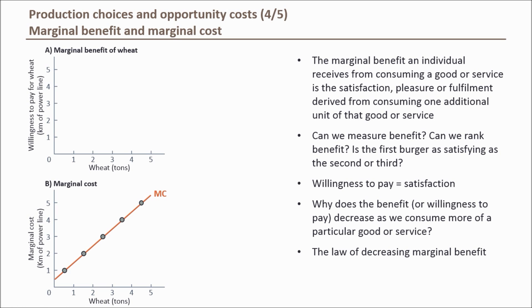The reason marginal benefit values are given is because benefit or satisfaction is not derived from any sort of function, but rather it is a reflection of consumer preferences. What we do know is that marginal benefit should be a decreasing line as per the law of decreasing marginal benefit. In Figure A the marginal benefit line is drawn for us, and from this line we can plot some values by reading off the x and y axes.